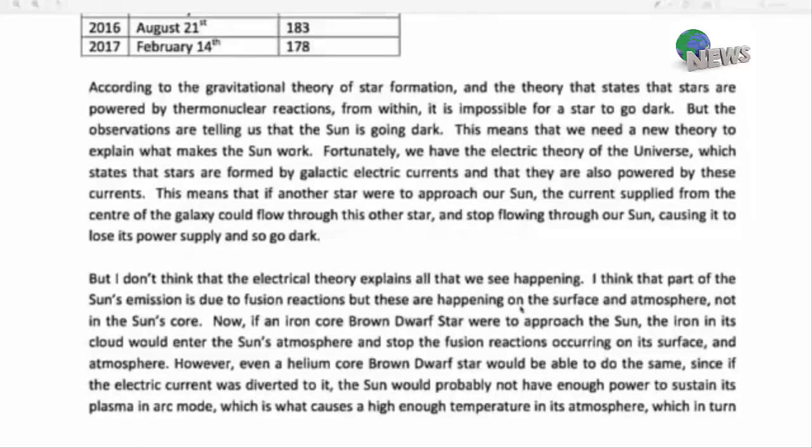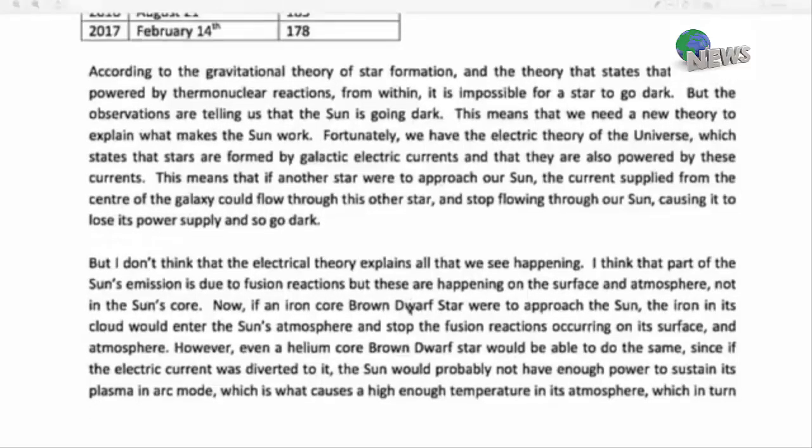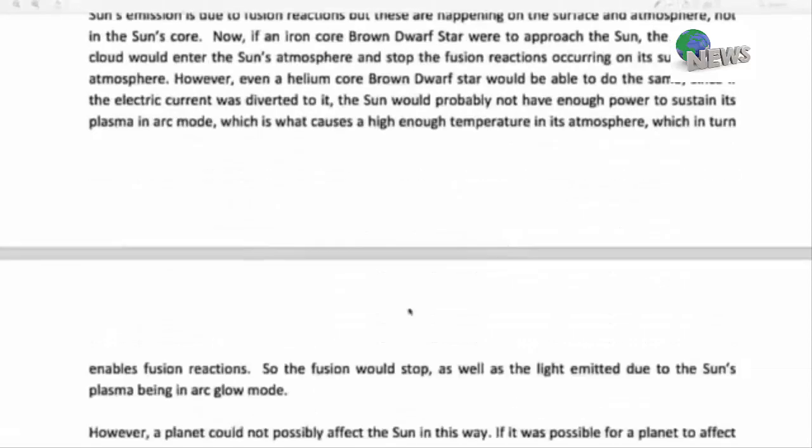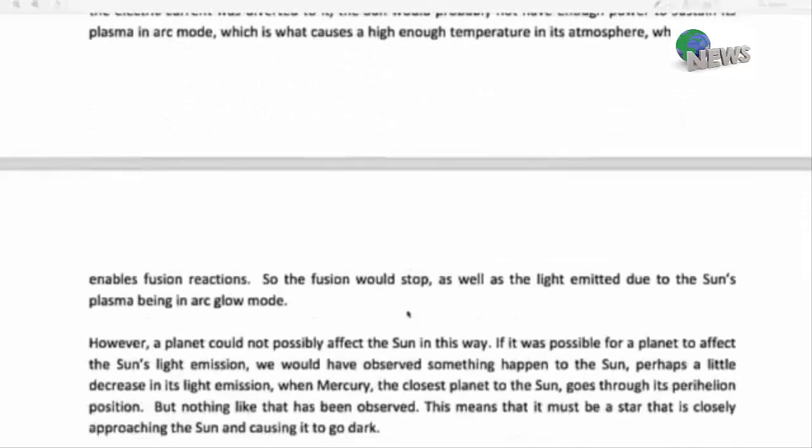I don't think the electrical theory explains all that we're seeing happening. I think that part of the sun's emission is due to fusion reactions, but these are happening on the surface and atmosphere, not in the sun's core. Now if an iron core brown dwarf star were to approach the sun, the iron in its cloud would enter the sun's atmosphere and stop fusion reactions occurring on its surface and atmosphere. However, even a helium core brown dwarf star would be able to do the same, since if the electric current was diverted to it, the sun would probably not have enough power to sustain its plasma in arc mode, which is what causes a high enough temperature in its atmosphere which enables fusion reactions. You just take the sun down a notch and it's enough to stop the fusion reactions on the surface, but doesn't stop the light or the coronal holes as well as the light emitted due to the sun's plasma being in arc glow mode.